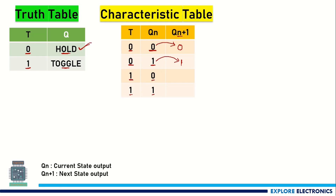When input T is 1 and the current state output is 0, it should toggle. So this 0 is changed to 1 in the next state. Similarly, if the current state is 1 and T is 1, it will change to 0. The first two rows are hold states, holding 0 and 1 respectively. The last two are toggle states — 0 becomes 1 and 1 becomes 0.